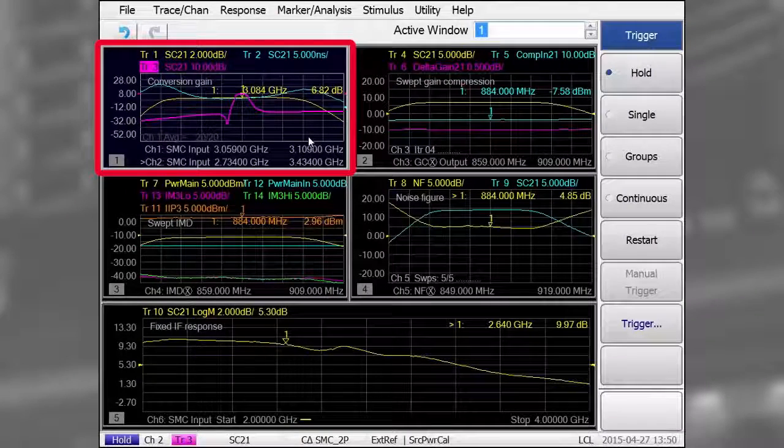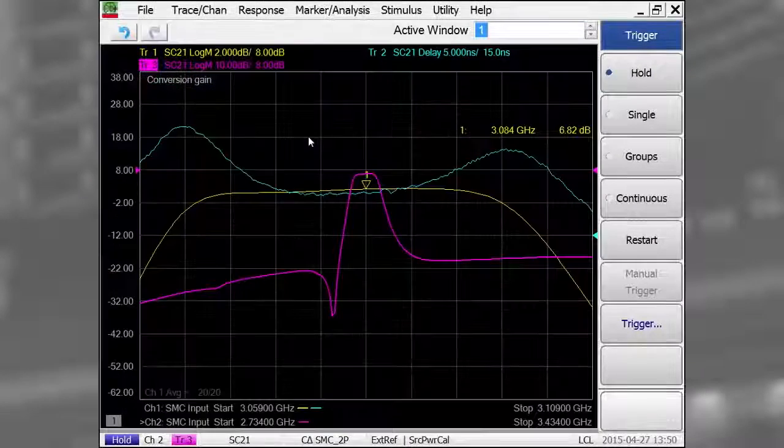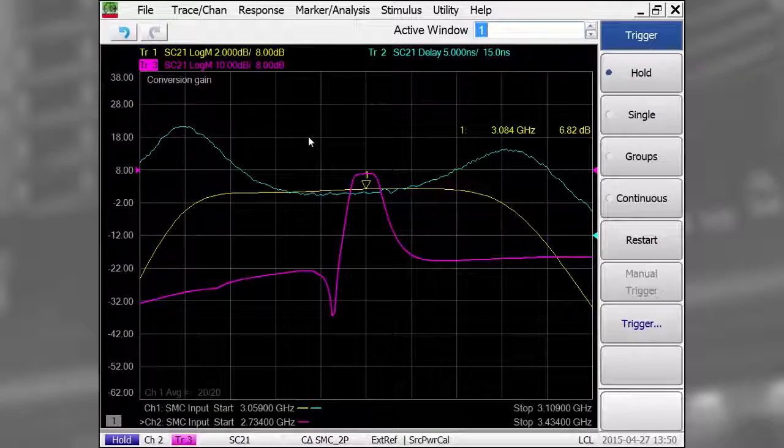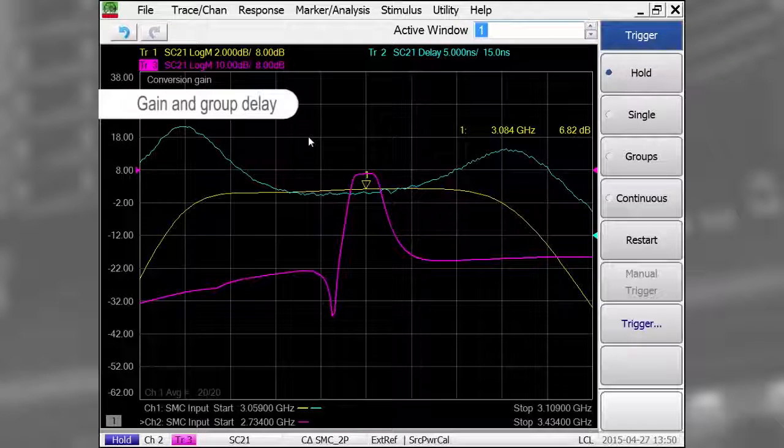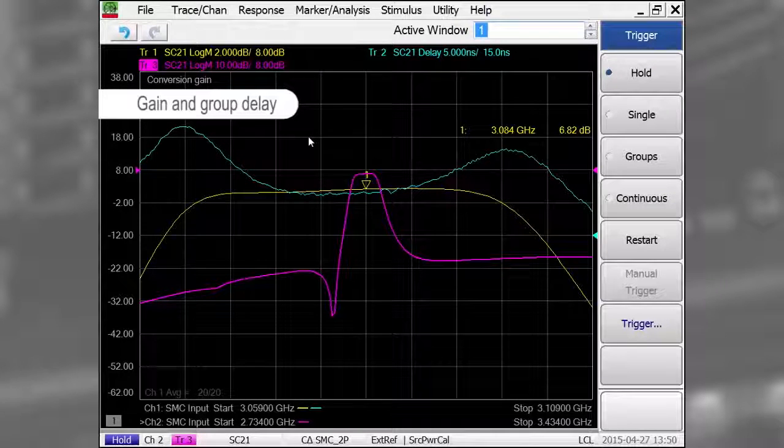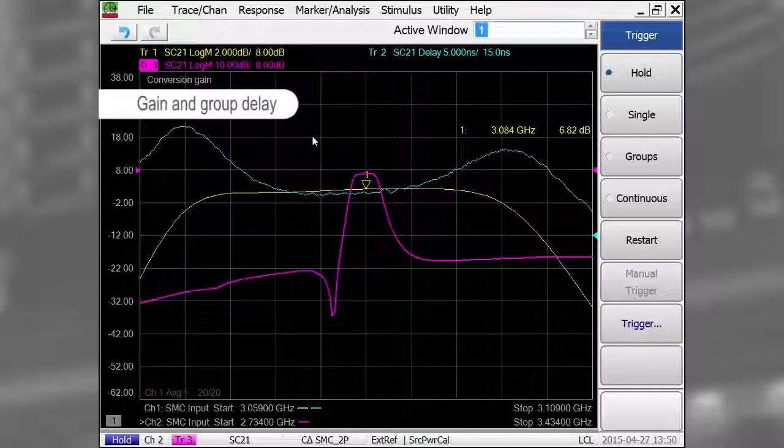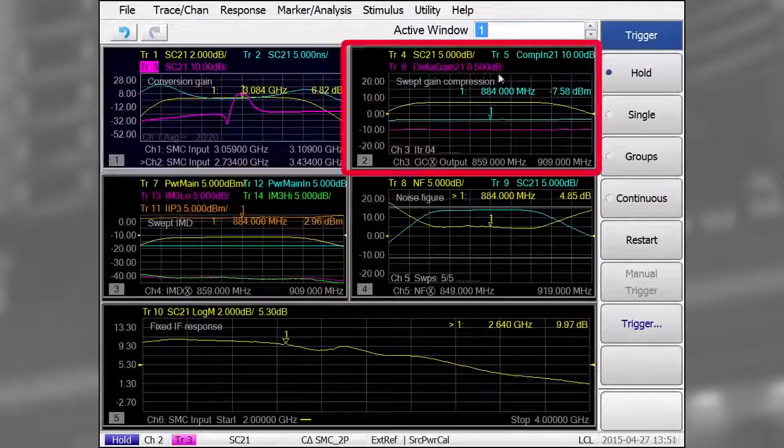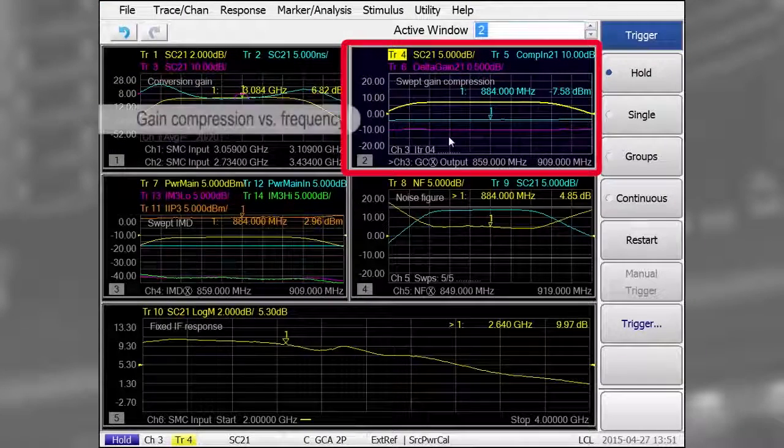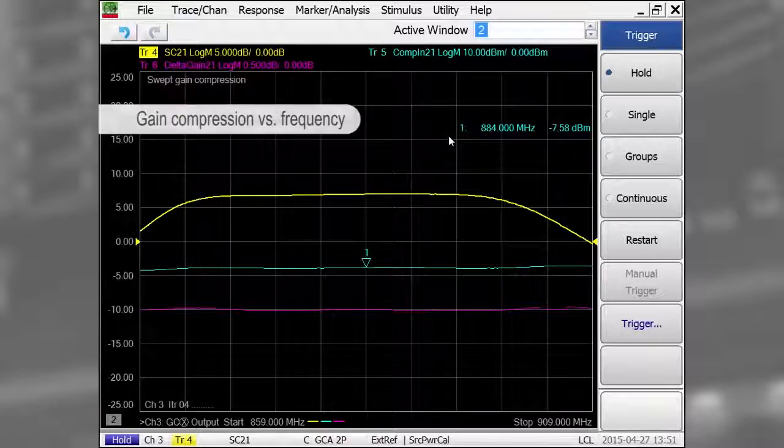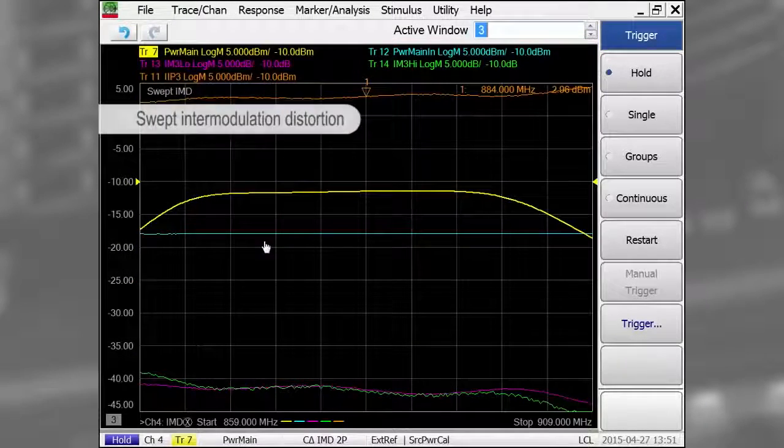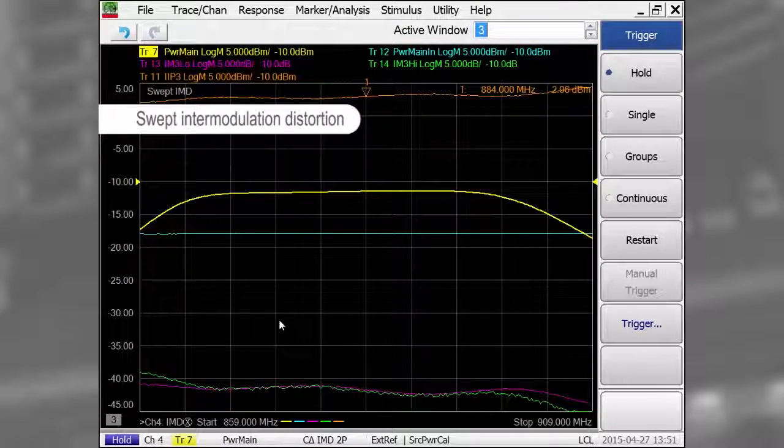In this window, I'm performing a narrow frequency sweep with a fixed LO to look at gain and group delay in the passband, and a wider sweep to look at stop band performance. In this window, I can quickly measure gain compression versus frequency, and in this window, I'm measuring swept intermodulation distortion performance.